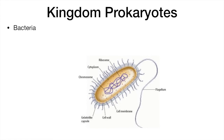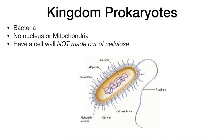You probably have an idea what these are — they are bacteria. This kingdom is easier to classify than others as they don't have distinct features: they don't have a nucleus nor do they have mitochondria, and their cell walls are not made out of cellulose.